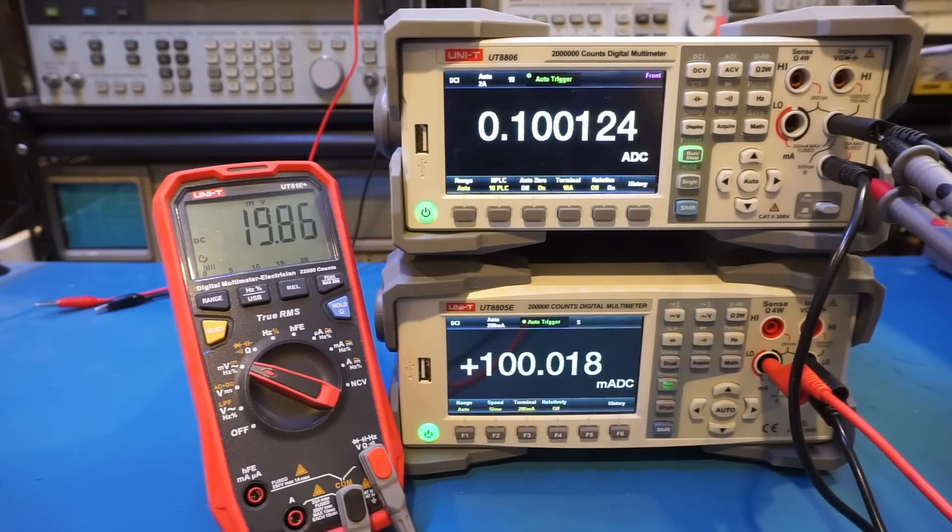Of course, you can use a similar trick on lower counts meters, namely using the amp range to measure low current, and get the same benefit of lower burden voltage as well. But the resolution you get will be much lower. I did a full video on this topic, and I will leave a link to that video in the video description below.